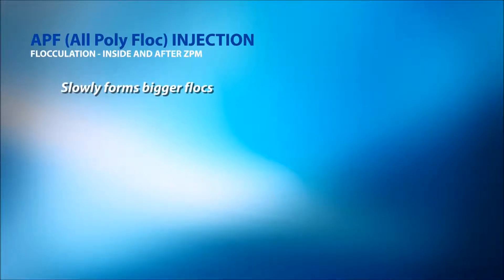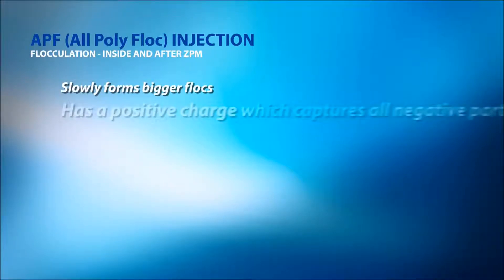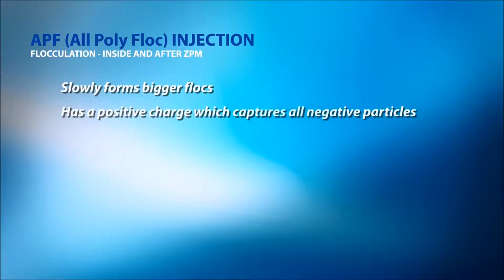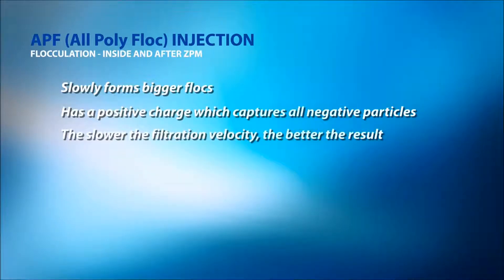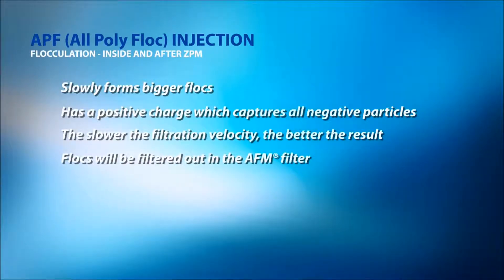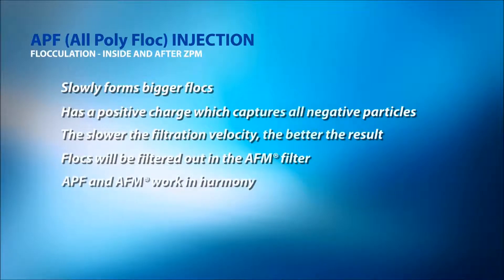Good coagulation and flocculation prior to the filter gives the best result in the AFM filter. With an APF, ZPM, and AFM filtration system, we can reduce chlorine demand by up to 80%.